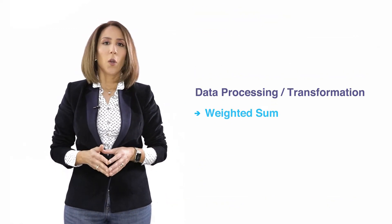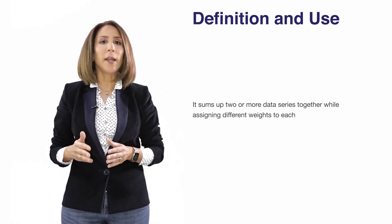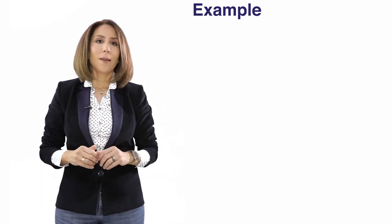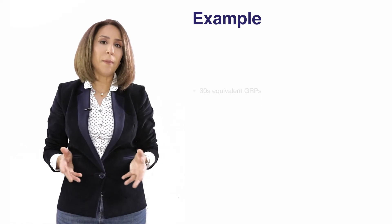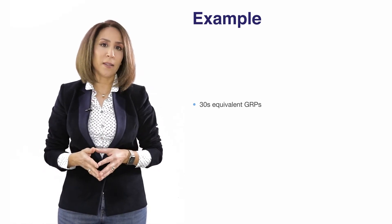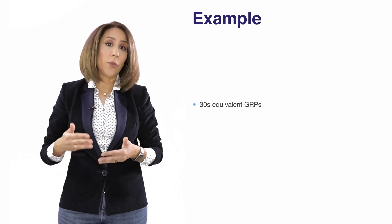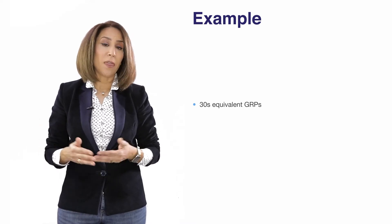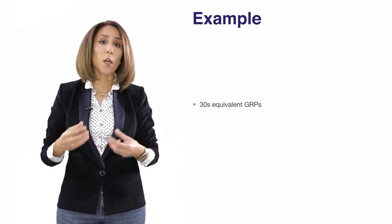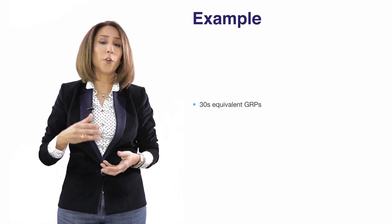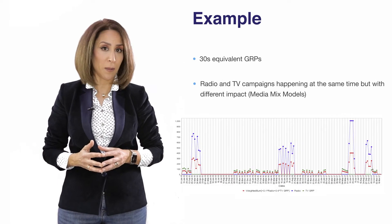Weighted Sum allows you to add up different variables while assigning a different weight to each one. One application is the creation of the 30-second equivalent GRP. We know that longer spot lengths are more costly, so to create a 30-second equivalent GRP we use cost as weights for the different spot lengths.